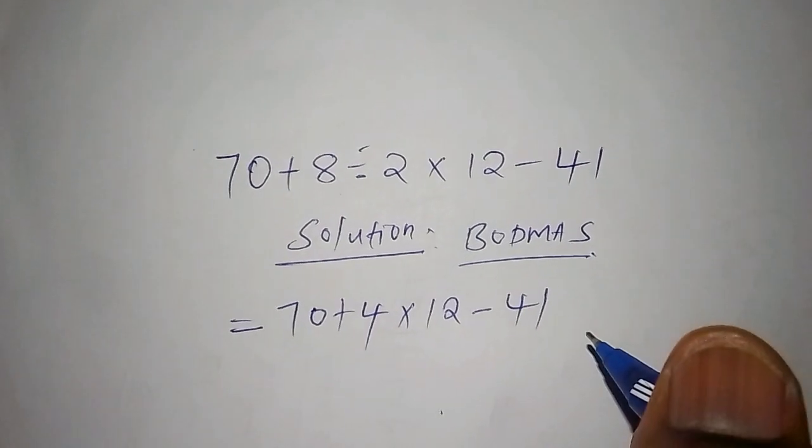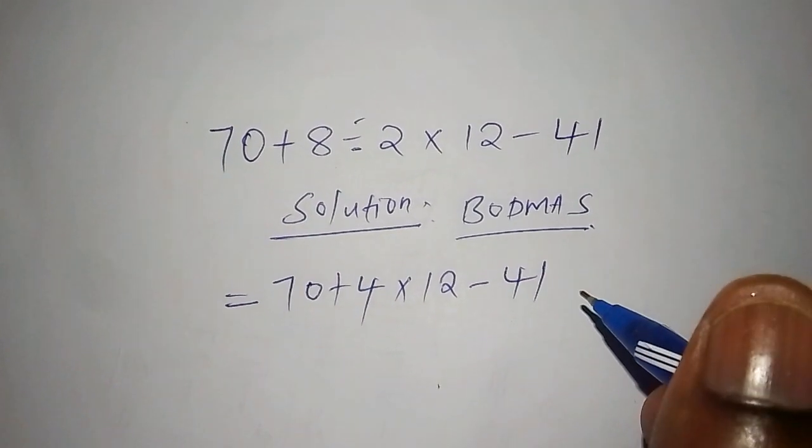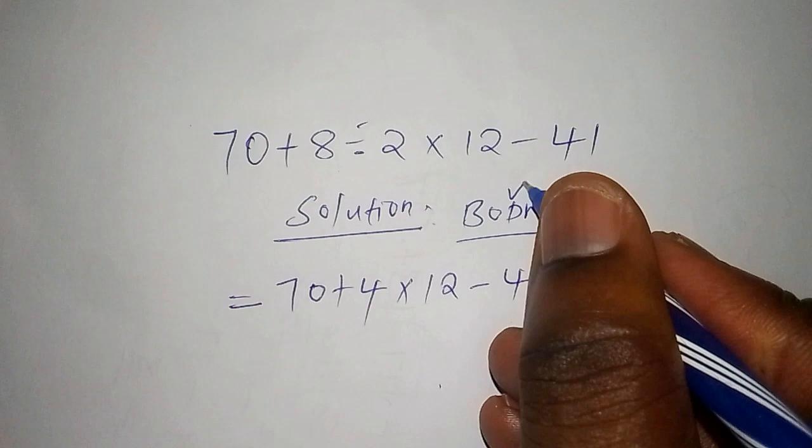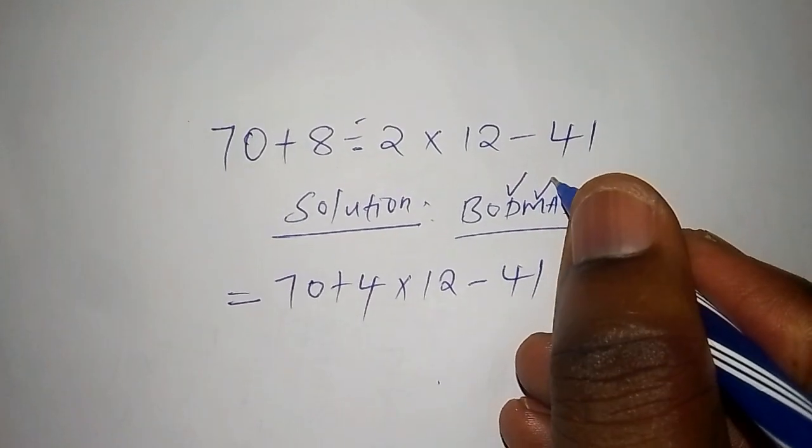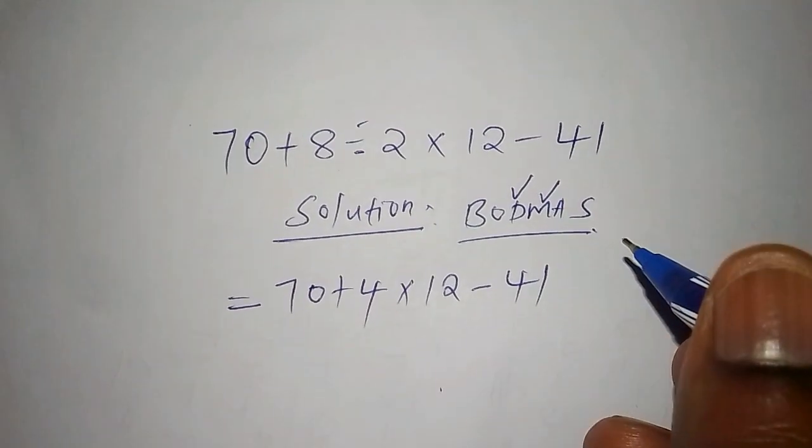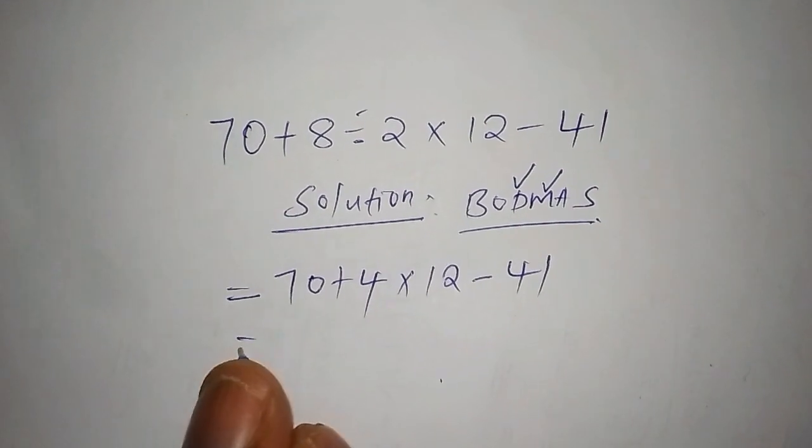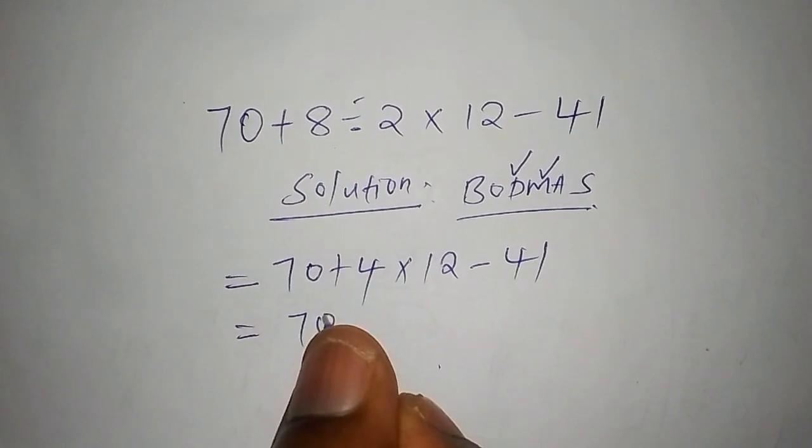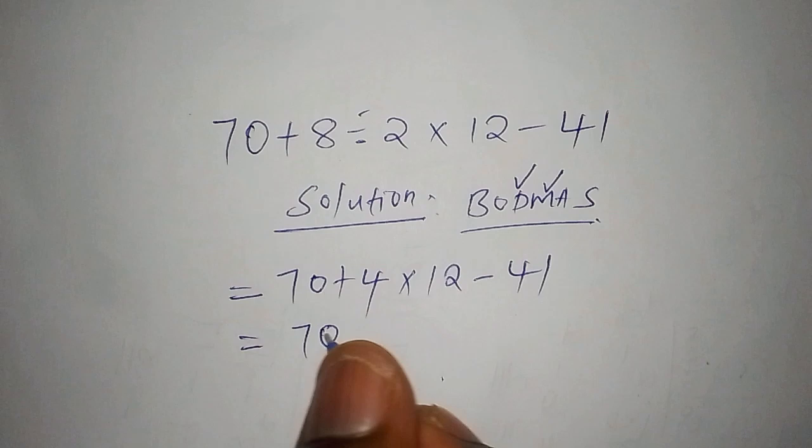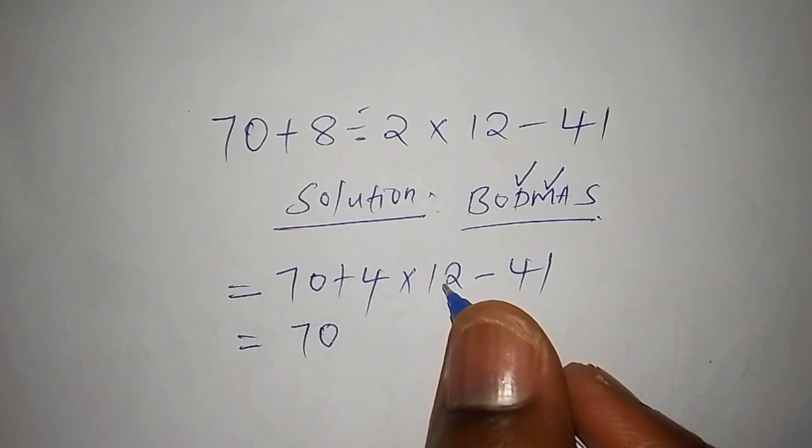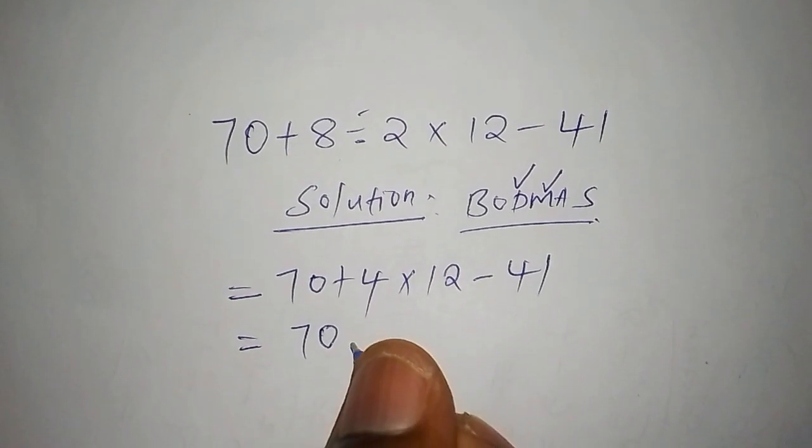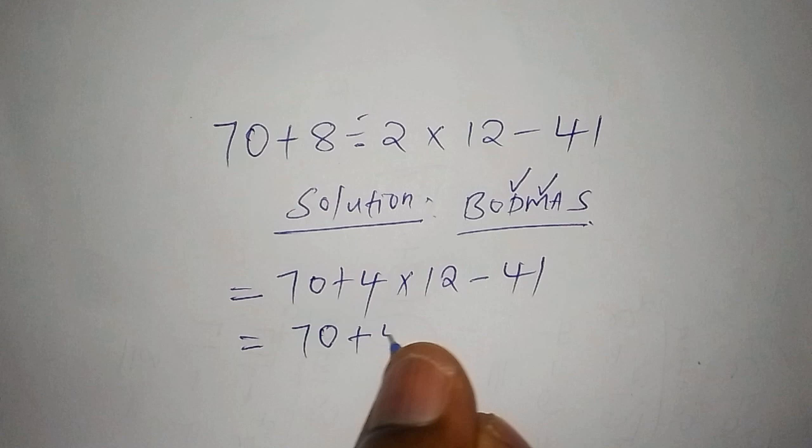The next step, apart from that we're going to move from division. We started with division, now we are going to move to multiplication. So we're going to work out 4 multiply by 12. Here we shall now take 70, then 4 multiply by 12 is 48. So we're going to work out 70 add to 48 subtract from 41.